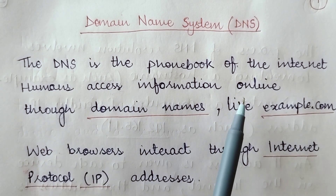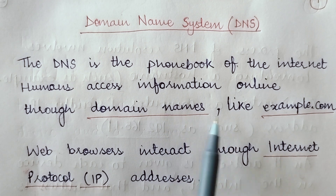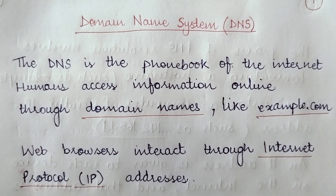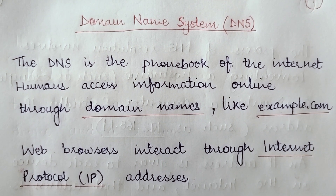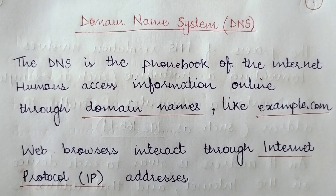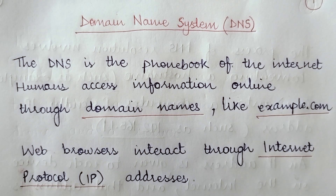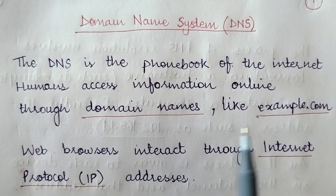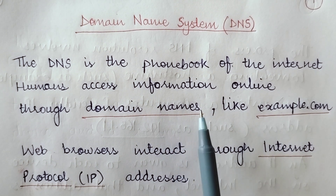Humans access information online through domain names like example.com. Whatever is the name of a site — be it social networking sites, search sites, or shopping apps — the name of that site is known as the domain name.